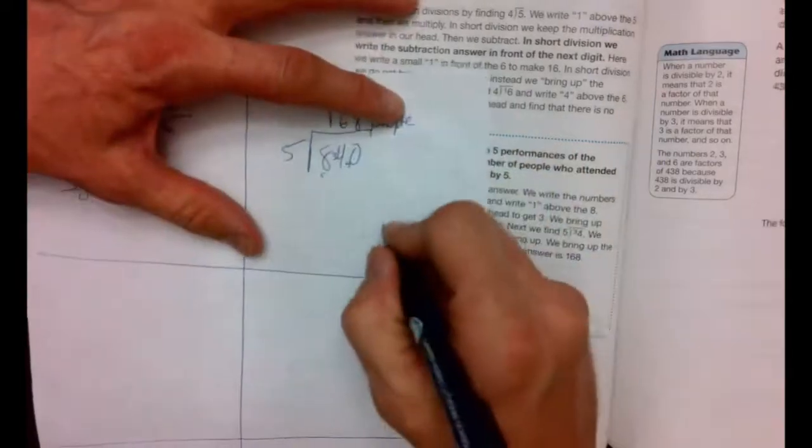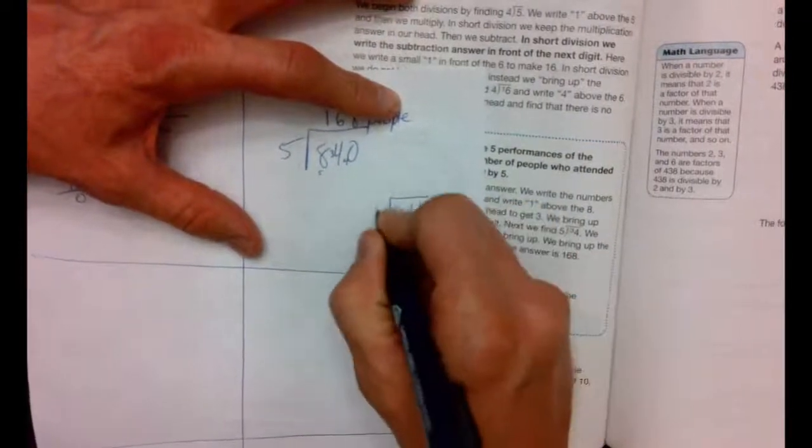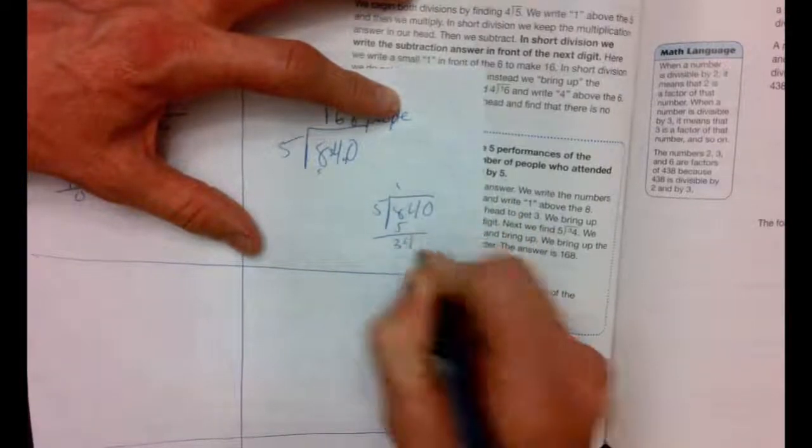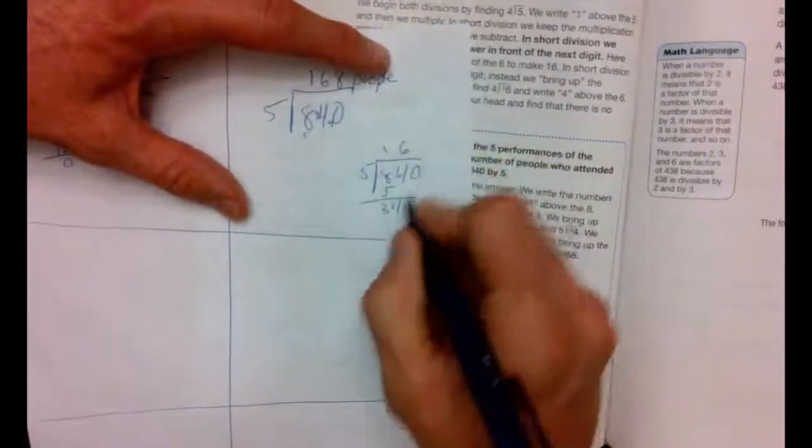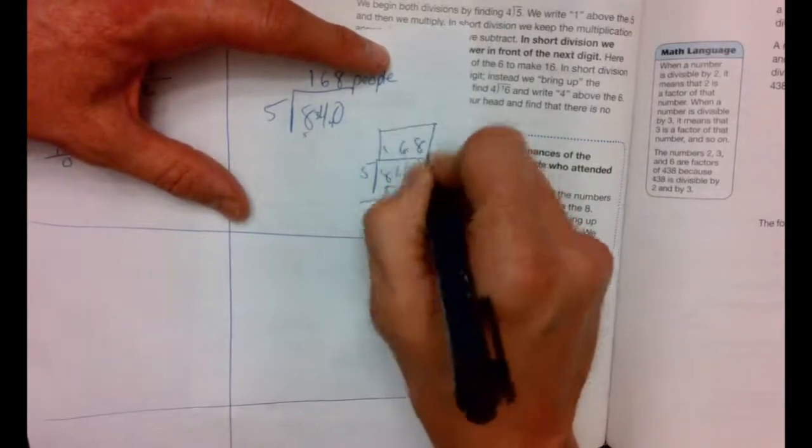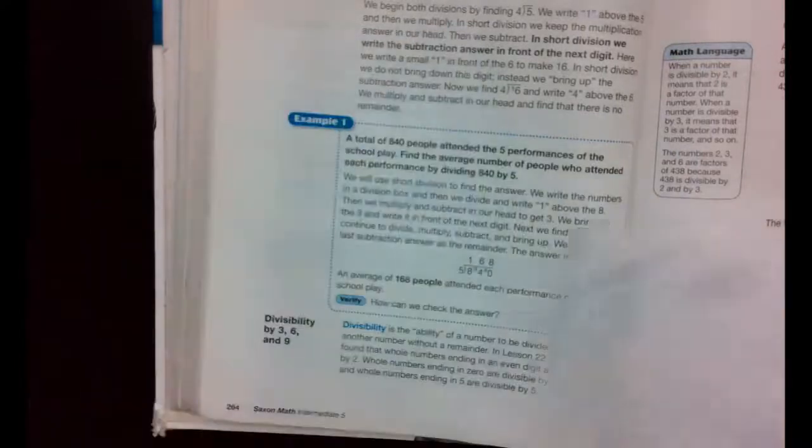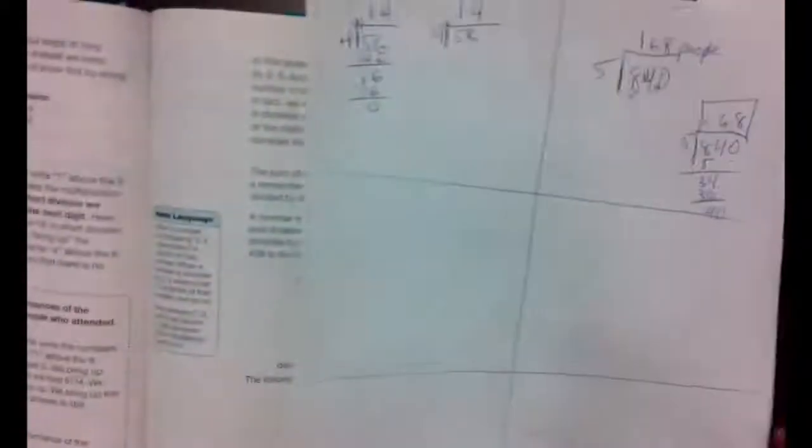Now if you don't like short division and that looks like a mess to you, that's no problem. You can always do long division. Go ahead and do it the way that you're used to. Feel free to just write it all out. Keep everything lined up. And both ways you come up with the same answer. Short division is just a little bit quicker if you're super quick about it.